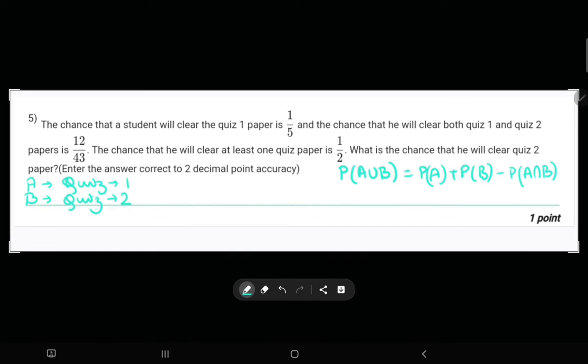The value of P(A union B) is given as 1 by 2. P(A) is given as 1 by 5, and P(A intersection B), that he will clear both 1 and 2, is given as 12 by 43.